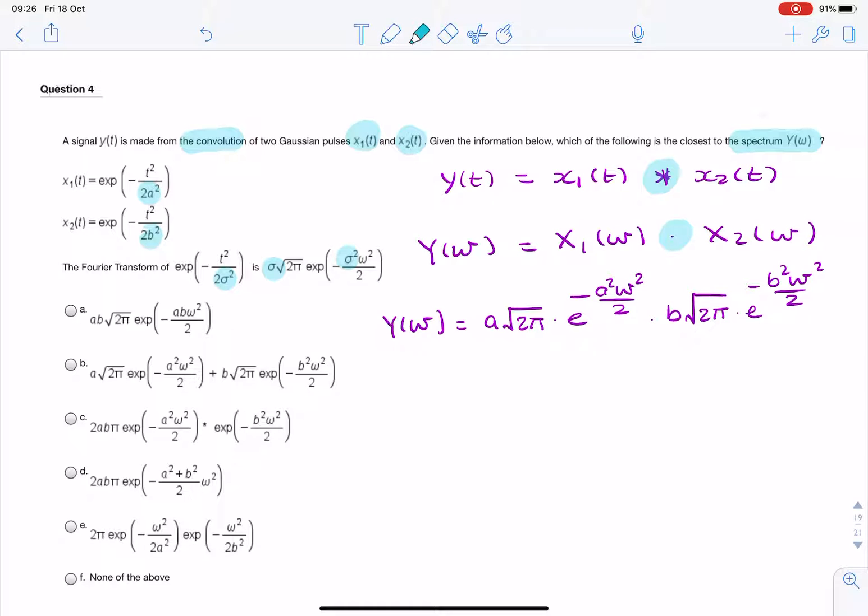So notice how the convolution has become a straightforward multiplication without the need for any integration. So now we simply multiply the coefficients. Square root of 2 times square root of 2 is 2ab pi. And then you add the two powers. So you have minus a squared omega squared over 2 minus b squared omega squared over 2.